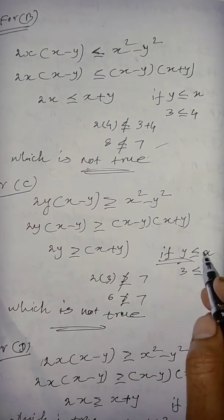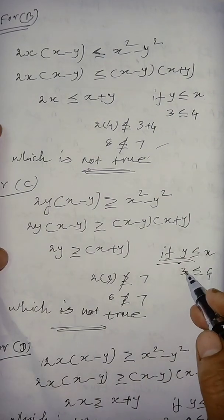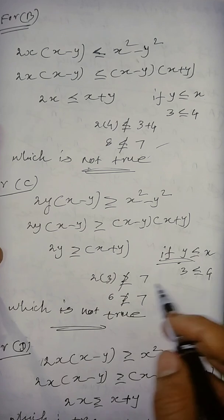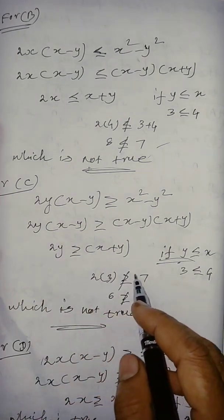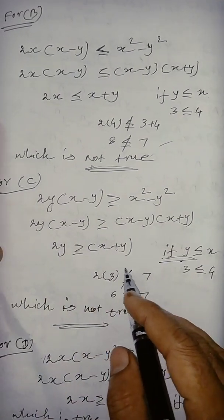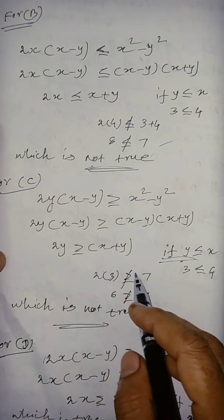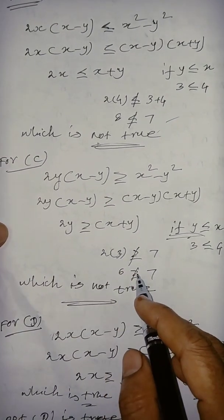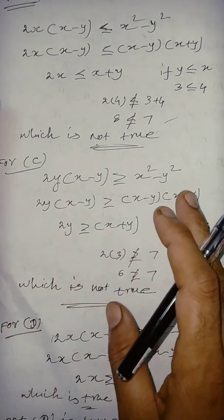So, take same condition, I am going to take same example also, y3, x4, apply here, 6, which is, does not inequality, greater than equality for 7. So, in particular case, this inequality is not true.